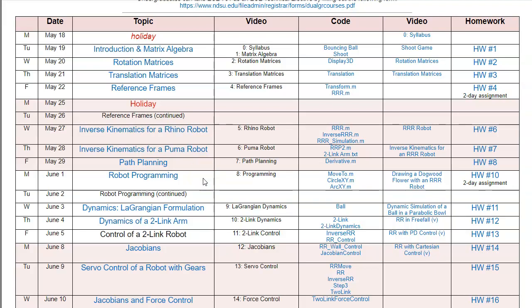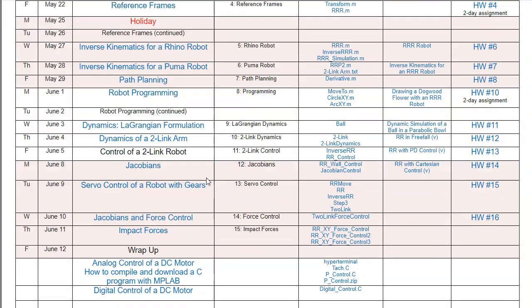Then we'll look at robot programming — having a robot go from point A to point B, and how to calculate the joint angles to do that. Next, we'll be looking at robot dynamics. Robots are inherently nonlinear, so we have a formulation of dynamics that handles nonlinearities — that's the Lagrangian formulation. We'll simplify it slightly and just do a two-link planar robot.